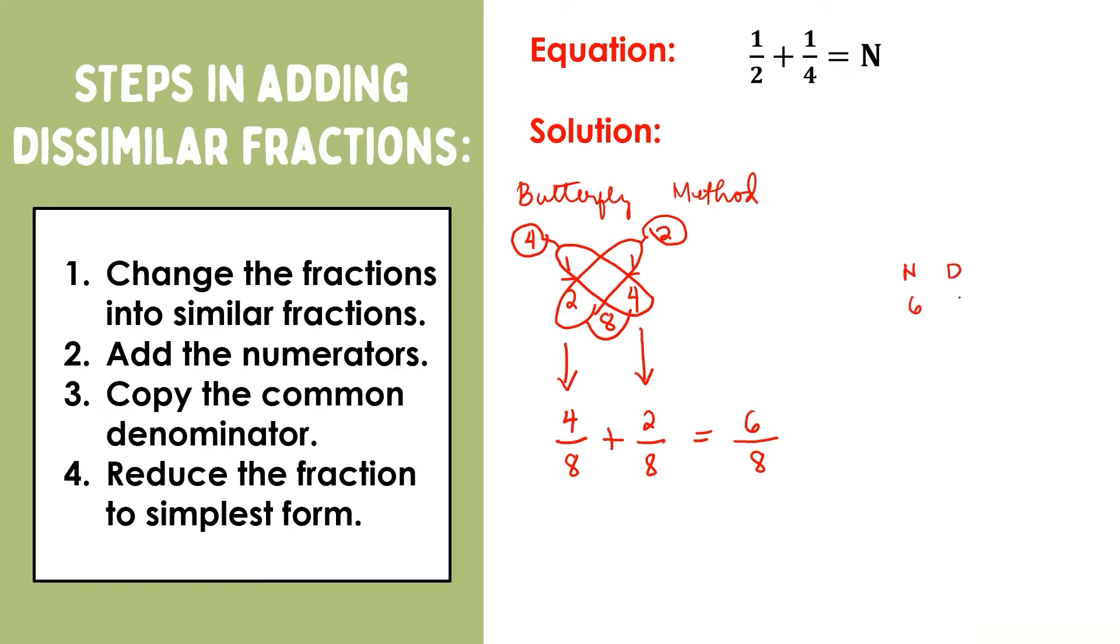But do not forget to express the answer in simplest form. 6 and 8 are both divisible by 2. 6 ÷ 2 = 3, and 8 ÷ 2 = 4. 3 and 4 has no common factor other than 1. Therefore, the simplest form of 6/8 is 3/4, and that is our final answer.